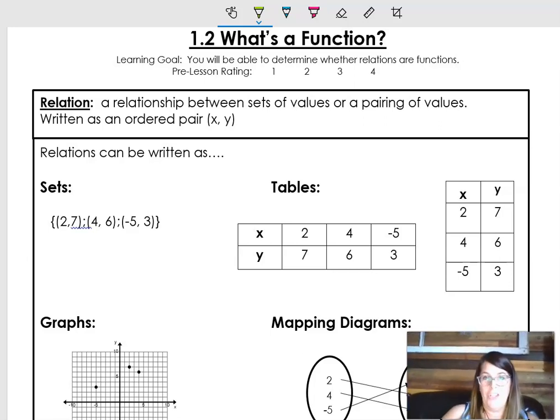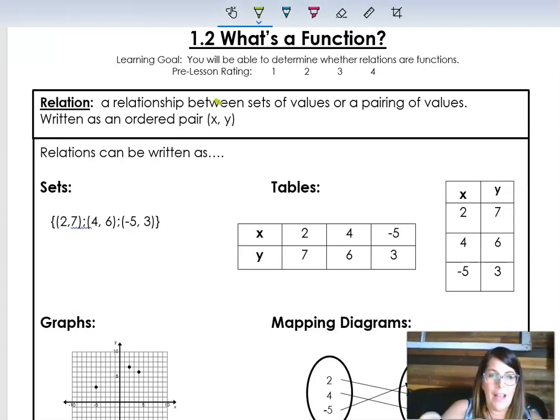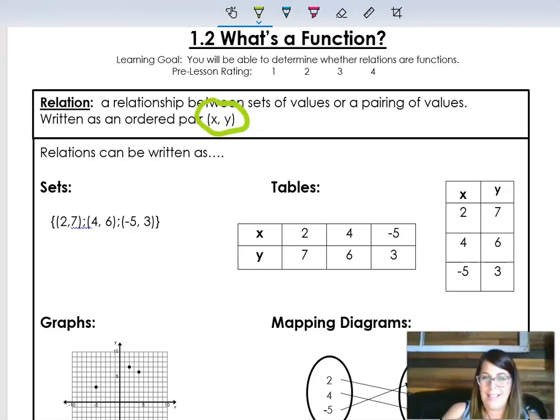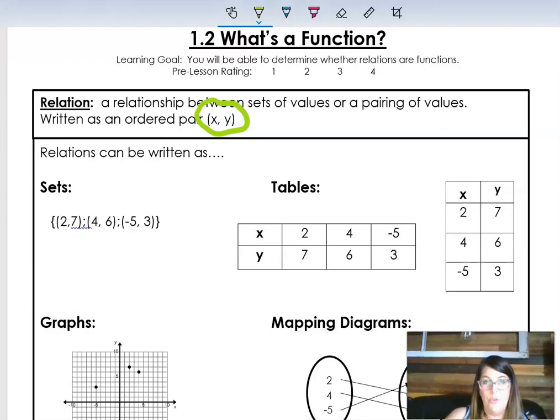So first, let's talk about what actually is a relation. A relation is any kind of relationship between values. Usually we're thinking about it as an ordered pair, like x and y. Every grouping of data, of information is a relation, not everyone is a function. To be a function, it takes something special. So let's get started first and make sure you understand all the different ways to represent relations.